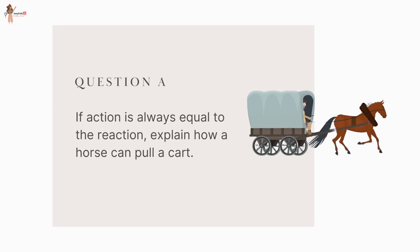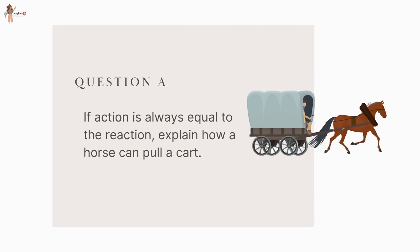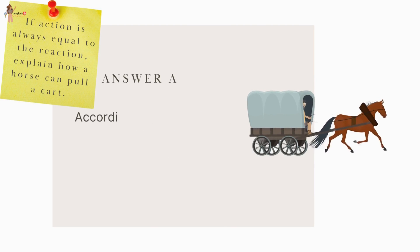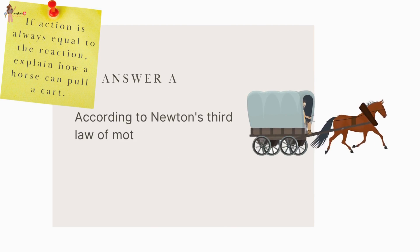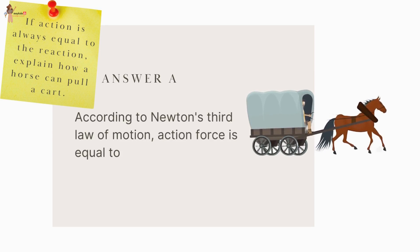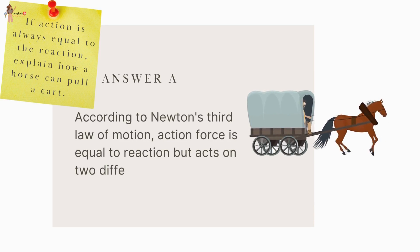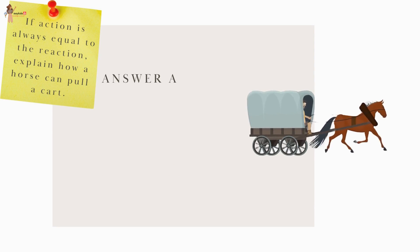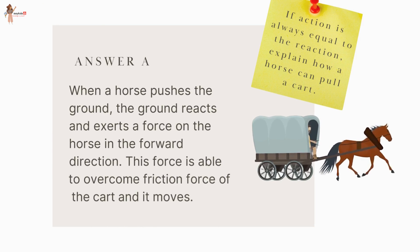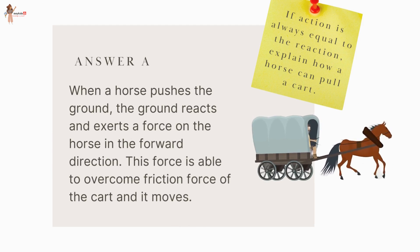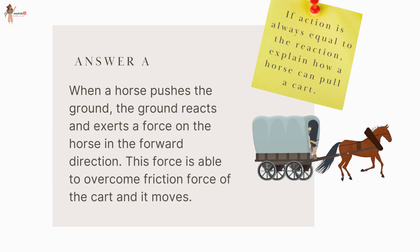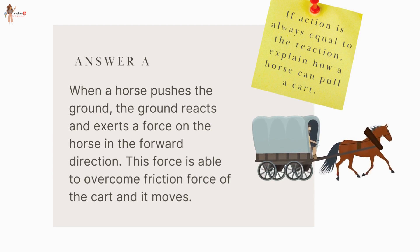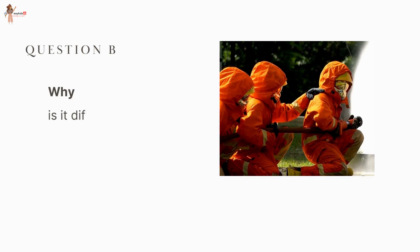Question: If action is always equal to reaction, explain how a horse can pull a cart. According to Newton's Third Law, action and reaction are equal but act on two different bodies in opposite directions. When a horse pushes the ground, the ground reacts and exerts a force on the horse in the forward direction. This force is able to overcome the friction force of the cart and it moves.